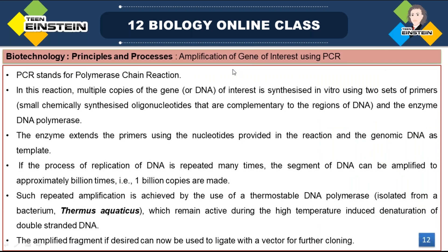Next is amplification — we need multiple copies of the recombinant DNA. This is done by PCR — Polymerase Chain Reaction. In PCR, millions of copies of the gene are synthesized in vitro using two sets of primers: forward primer and reverse primer. The genomic DNA works as a template strand.